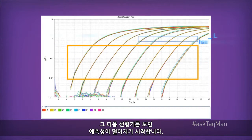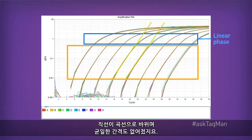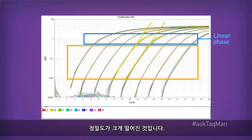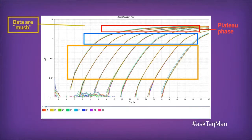But as the reactions move into the later cycles — the so-called linear phase — that predictability starts to go away. Our nice straight lines begin to curve, totally messing up the even spacing. And the precision drops off considerably. Finally, in the latest cycles, also known as the plateau, the data all merge together.